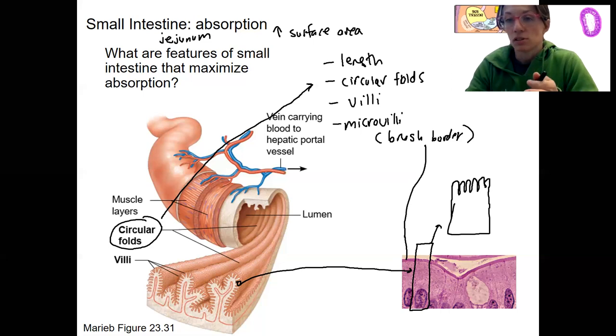In the jejunum, like the surface area there inside your body is like the size of a tennis court if you were to spread this whole shebang out. Pretty cool. You can absorb a lot in a tennis court area.